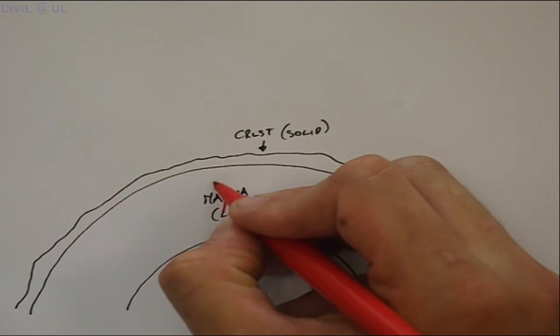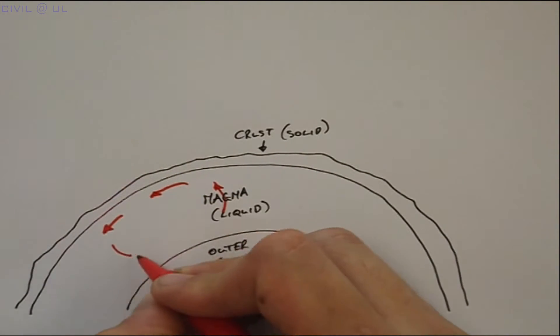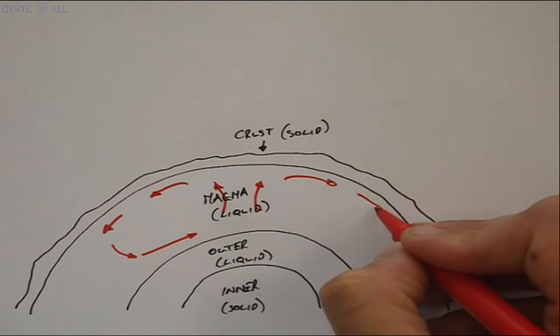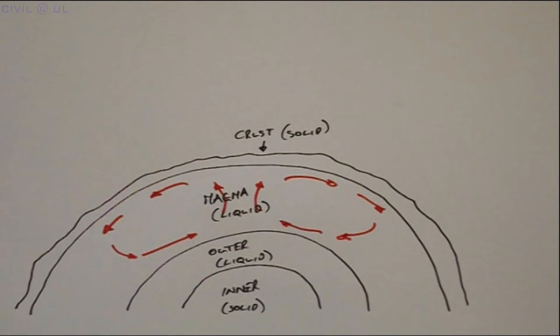Intense radioactive heat from the Earth's core causes the molten magma to rotate in convection currents, and the floating crust to experience stretching and compression forces that drive the movements of the Earth's surface.